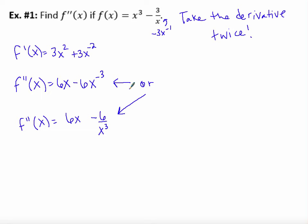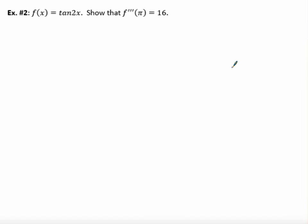If you're working on Math Excel, make sure you read the directions for how to enter it into the computer, or if you're on Khan Academy, so that you're entering it the way they're requesting. Example number two: F of x is equal to the tangent of 2x, and we're supposed to show that F triple prime of pi is equal to 16. So we have to take the derivative three times. It's trigonometry, so don't forget to get out your formula packet if you don't have it memorized. They don't just want the third derivative — they want us to show that when you substitute pi into the third derivative, you get 16.